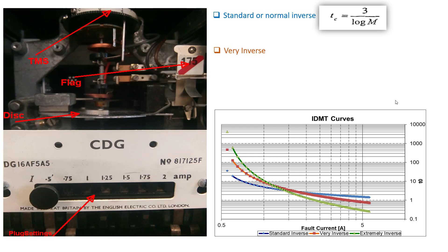Now the next one is the very inverse. The very inverse curve is given by the formula TC equals 1.6 over log M overall squared. You can see that this formula looks a bit different. Now why do we have a very inverse characteristics? When using IDMT relays in a protection scheme, the nearer the fault to the source of power, the slower the overall fault clearance time.